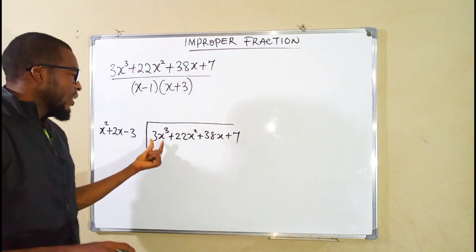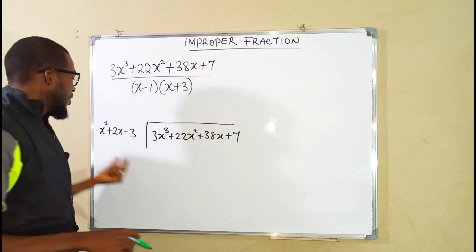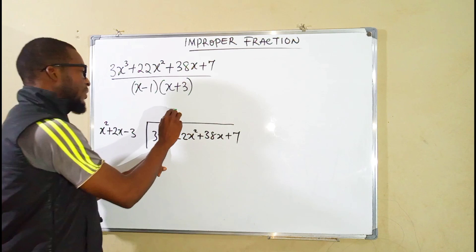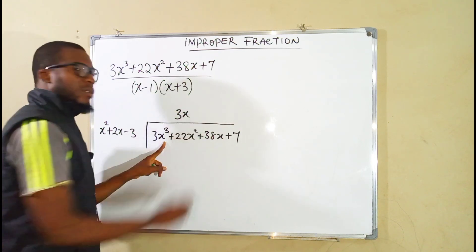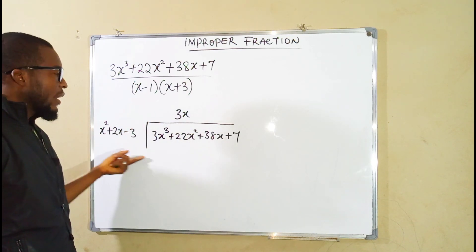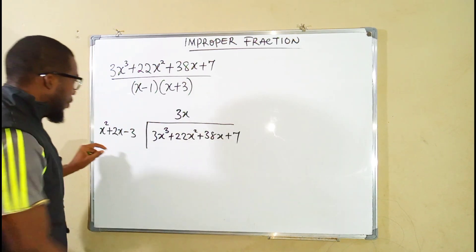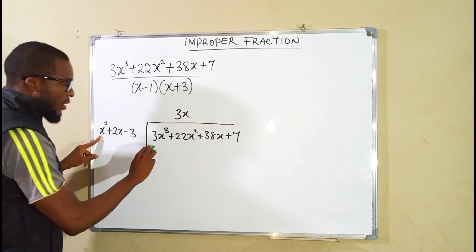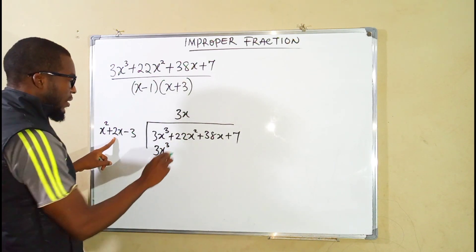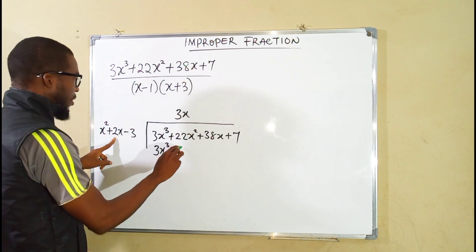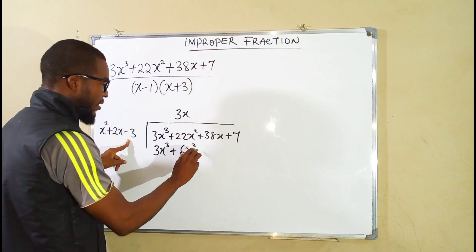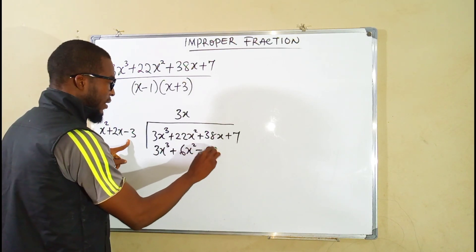As always you're going to take the first term here and divide it by the first term here. Therefore we say x squared can go into 3x cubed 3x times. We are going to take this 3x multiply these terms and align the result here. So we see 3x times x squared is 3x cubed. 3x times 2x is going to be 6x squared. Then 3x times negative 3 is negative 9x.